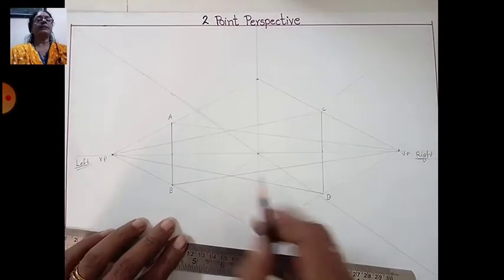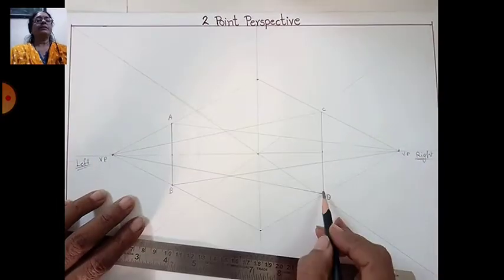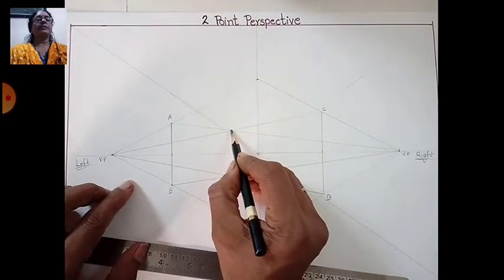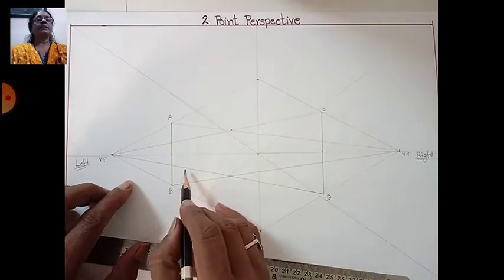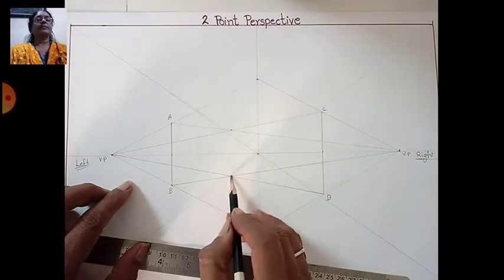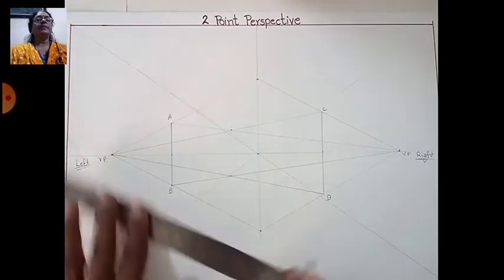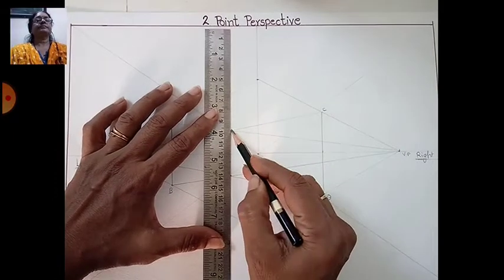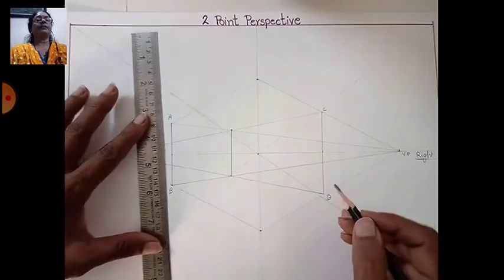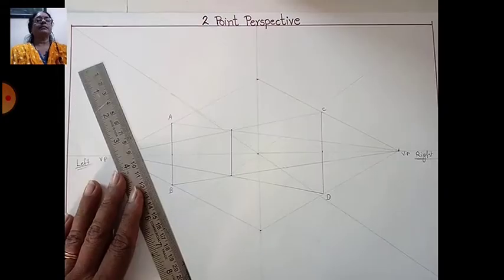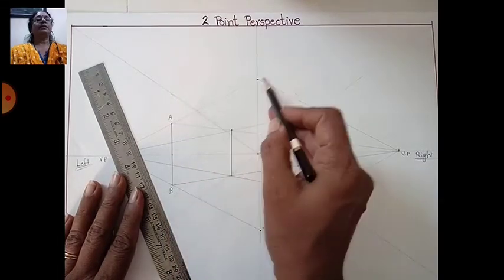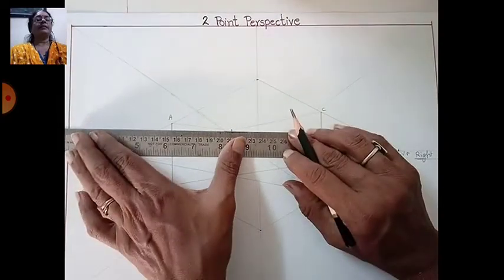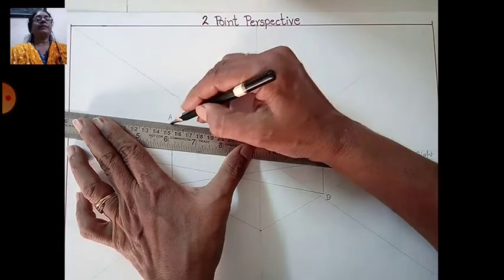You will get cross points where two lines cross — one upside cross point and one downside cross point. At those cross points, draw a vertical line.